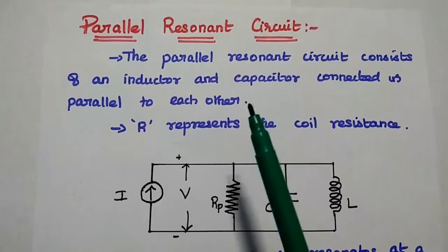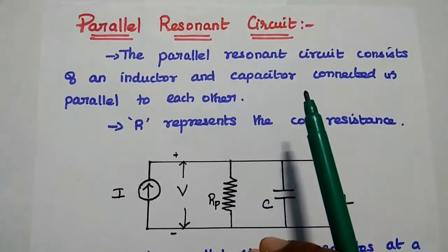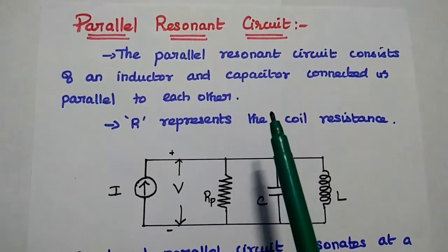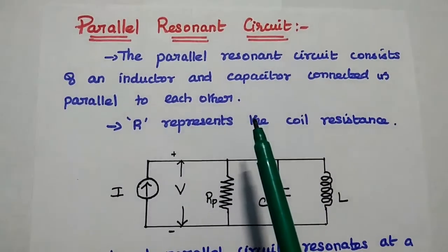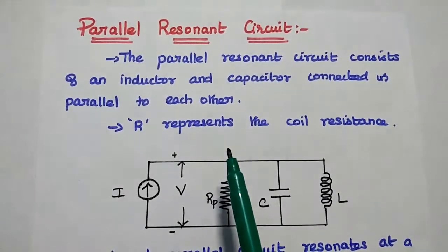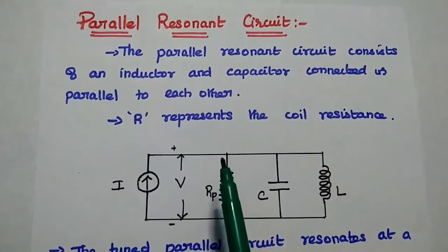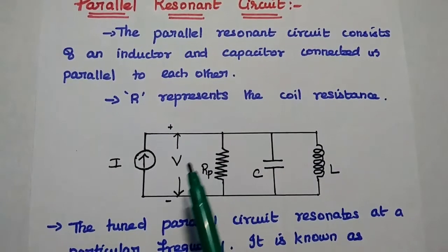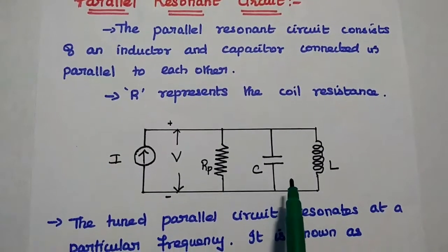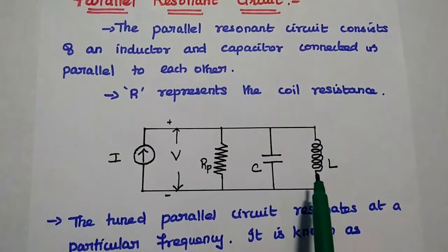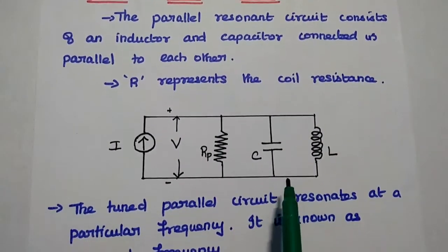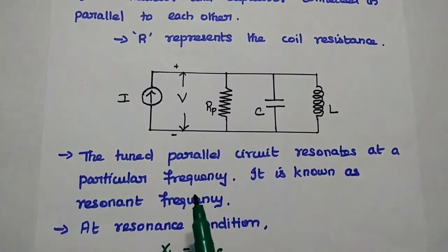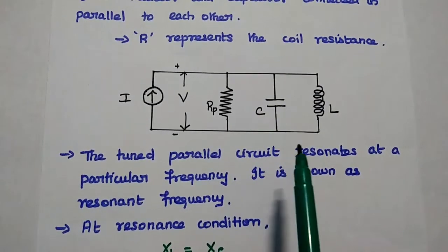We are going to discuss parallel resonant circuit in detail. In general, a resonant circuit consists of an inductor and capacitor. In a parallel resonant circuit, both inductor and capacitor are connected in parallel to each other. This is the diagram of the parallel resonant circuit. Here Rp represents the coil resistance, which is equivalent to the losses associated with the inductance. The tuned parallel circuit resonates at a particular frequency by varying the capacitor and inductor.